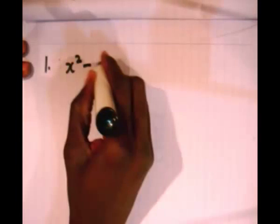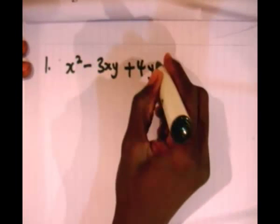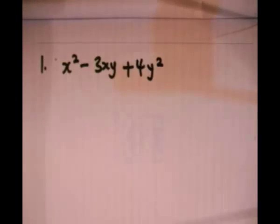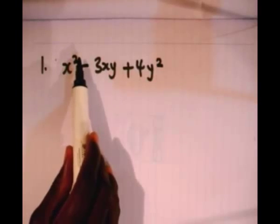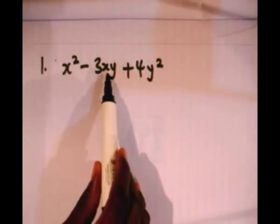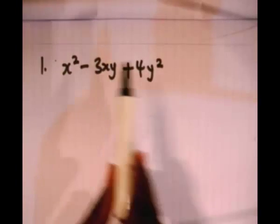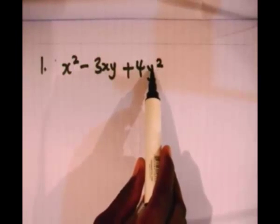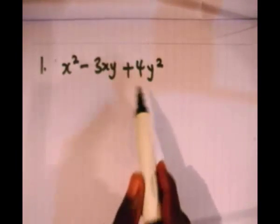Let's look at this example: x squared minus 3xy plus 4y squared. This is a polynomial. This term has degree 2, this term has degree 2, and this term also has degree 2. So each term has the same power, the same degree. So we say this is a homogeneous polynomial.